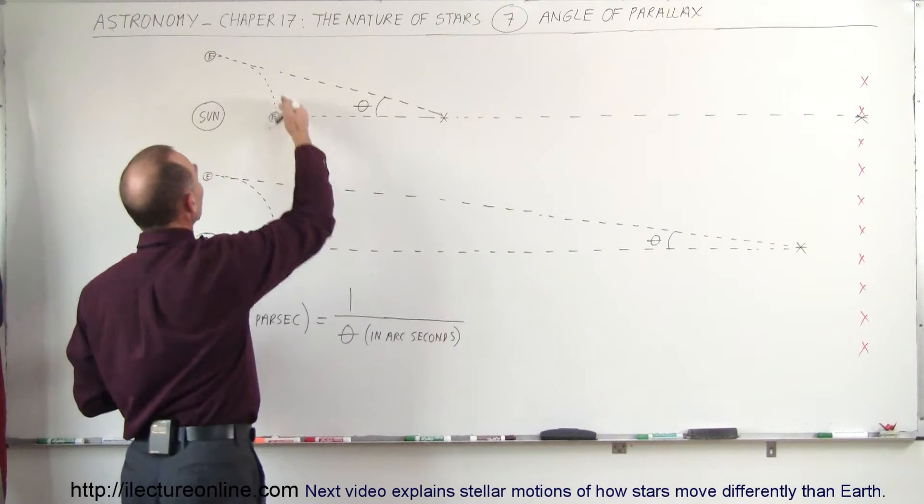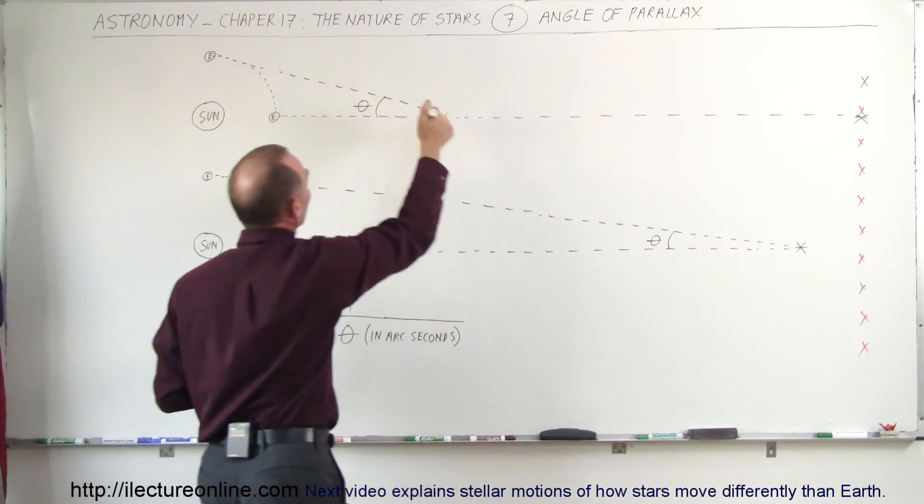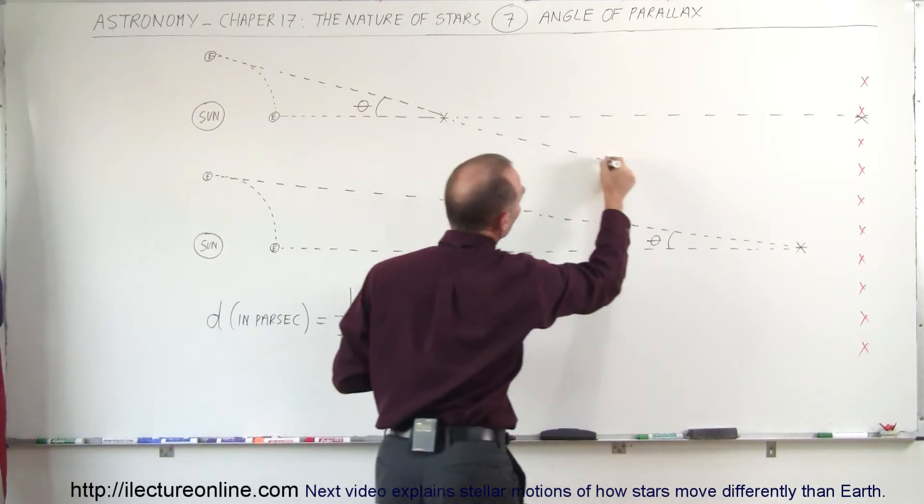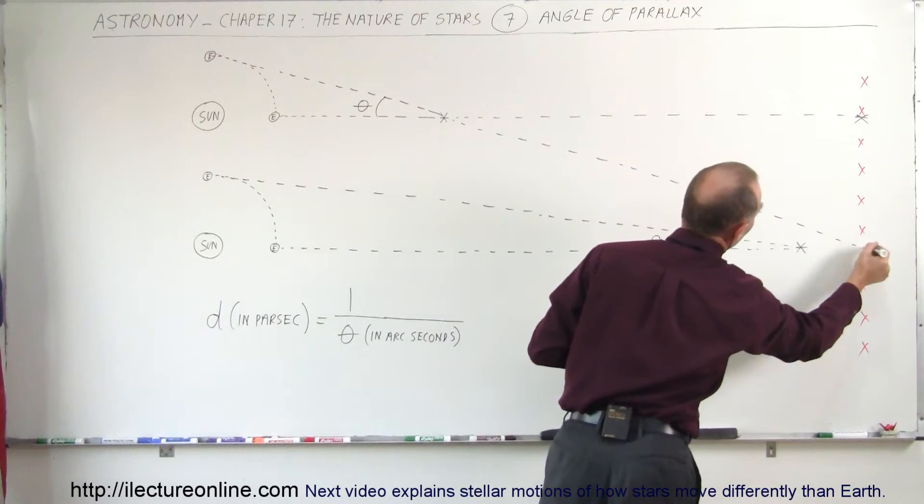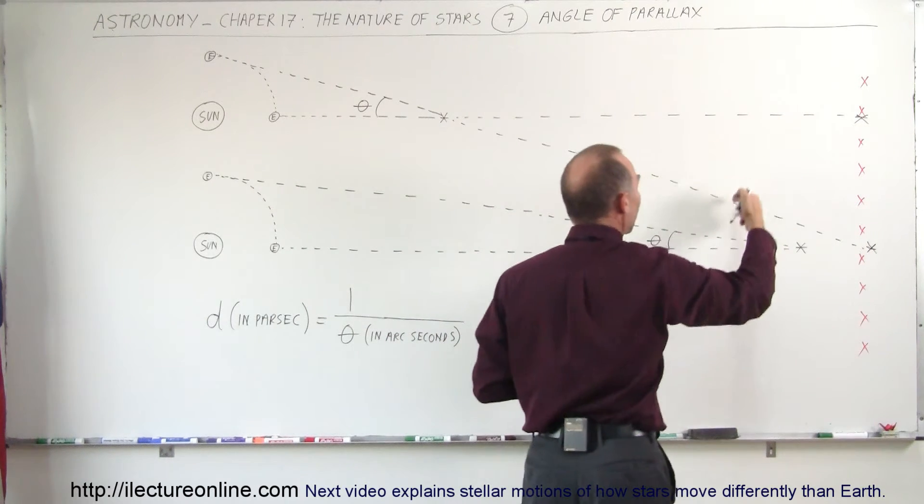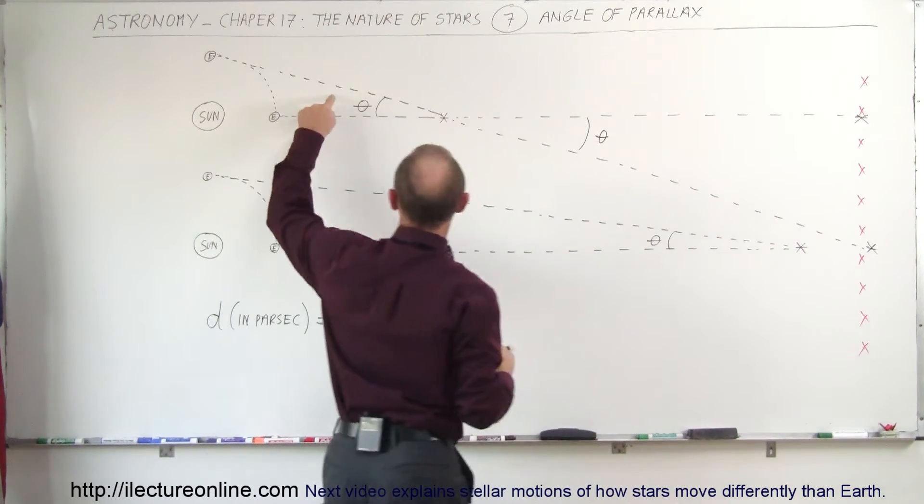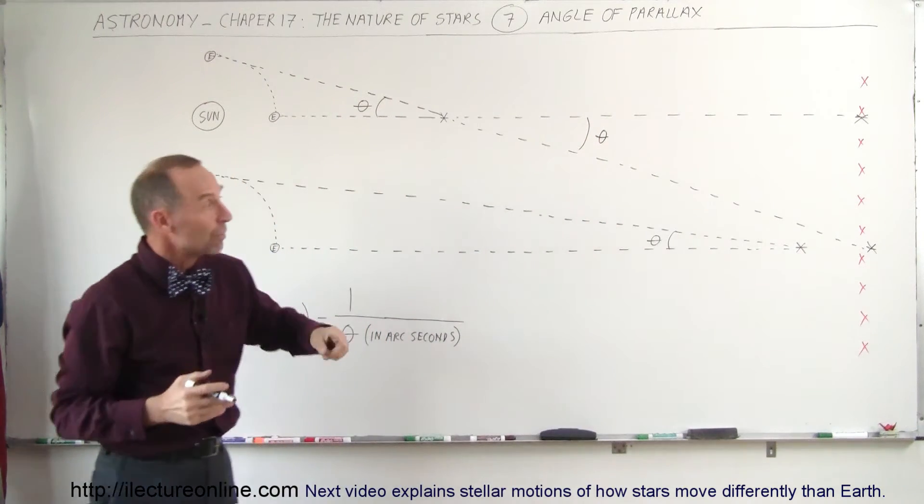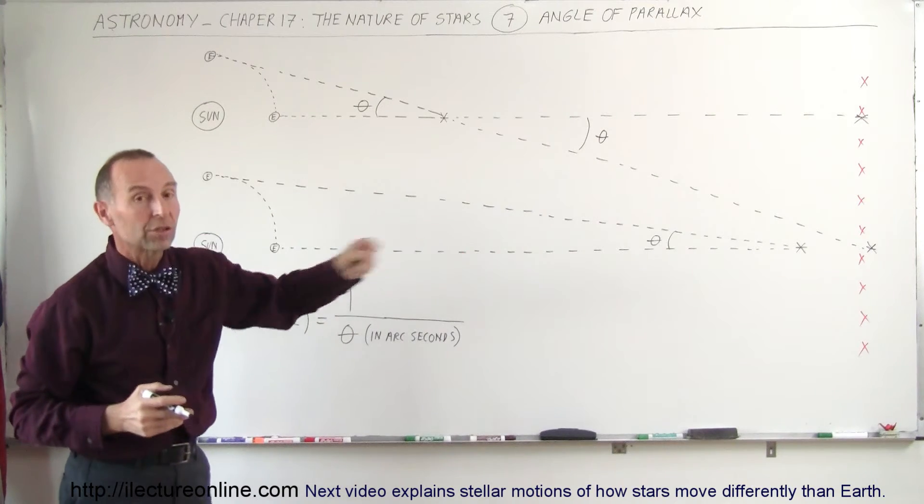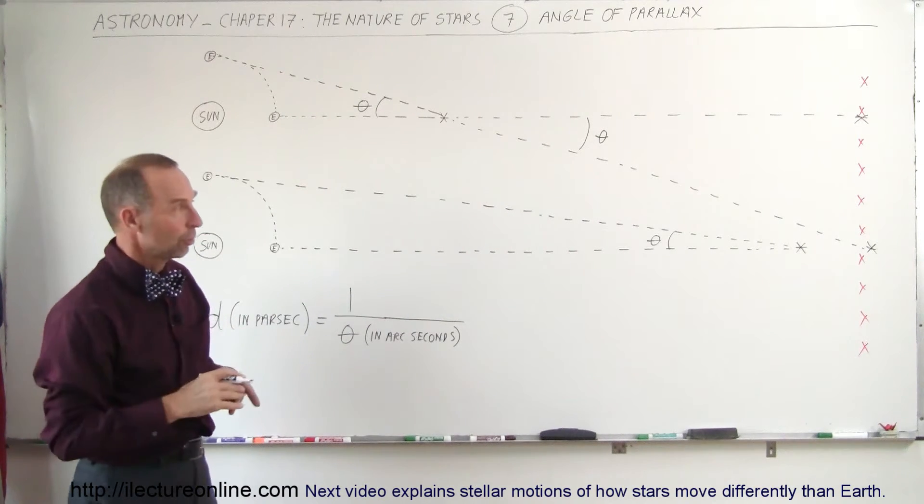But three months later when the Earth is over here and then you look at the star, you can see that this star would now appear at a different location relative to the background stars. And this angle, which is this angle right here, is called the angle of parallax, which is the same as this angle right there, can be measured by seeing where that star appears at different times in the Earth's orbit.